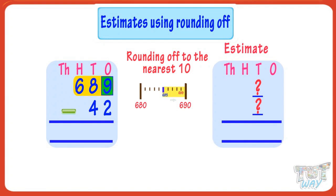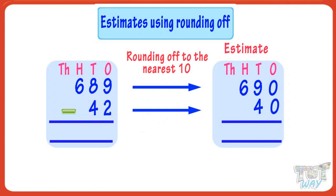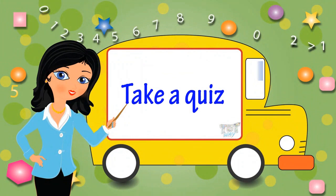In 689, the ones digit is 9, which is greater than five, so we round it up to 690. In 42, the ones digit is 2, which is less than five, so we round it down to 40. Subtracting the rounded figures: 690 minus 40 gives 650. So the estimate for subtracting 42 from 689 is 650. Now go ahead and take a quiz to learn more.